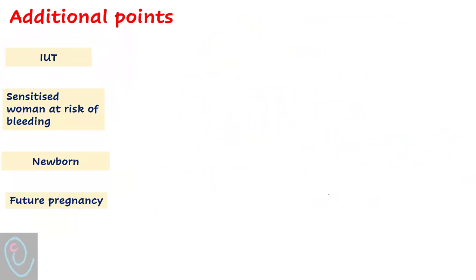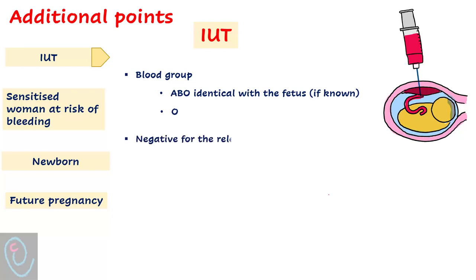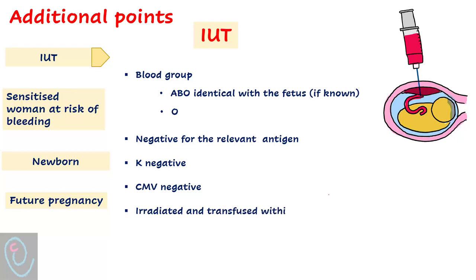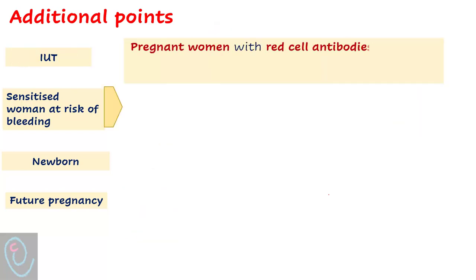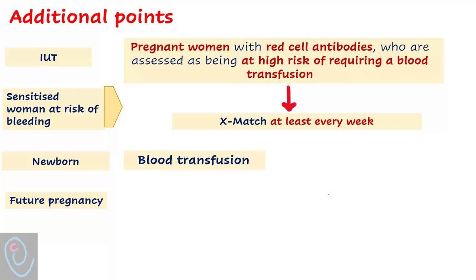Regarding intrauterine transfusion, red blood cells should be ABO identical with the fetus if known, or blood group O if unknown. They should be negative for the relevant antigen, K negative, CMV negative, irradiated, and transfused within 24 hours of irradiation. The plasma is removed to increase hematocrit up to 85%. For pregnant women with red cell antibodies at high risk of requiring transfusion, take a cross-match sample at least every week; if transfusion is required, use a red cell component of the same ABO group and RH type that is K negative and CMV negative.